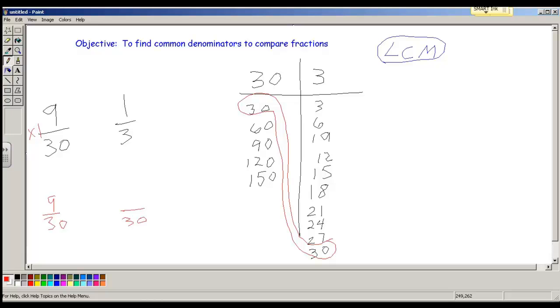I come over here. What did I do to this 3 to make it 30? Well, I did a lot. I had to multiply by 10. So whatever I did to the denominator, I need to do to the numerator. 1 times 10 is 10. So which one was bigger? This guy right here. 10 30ths.